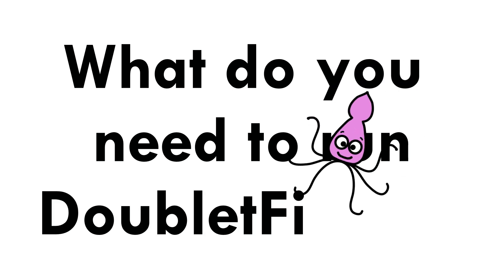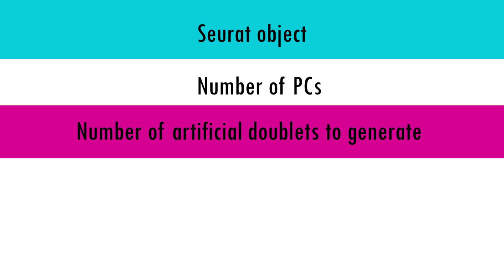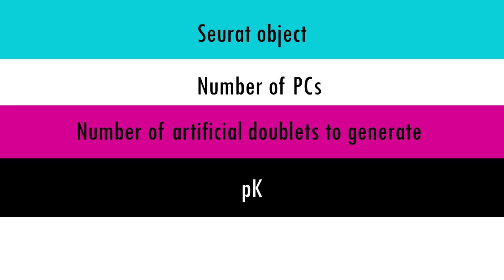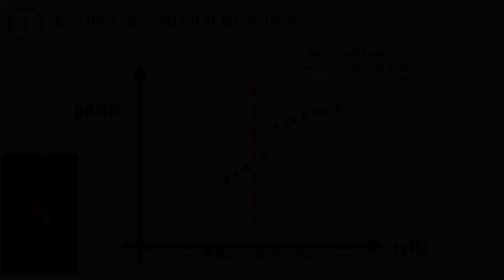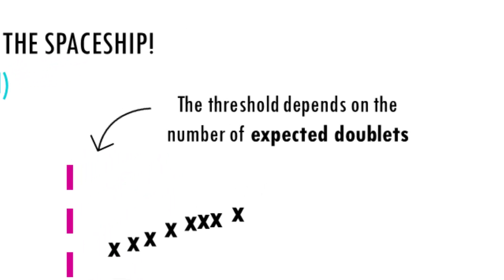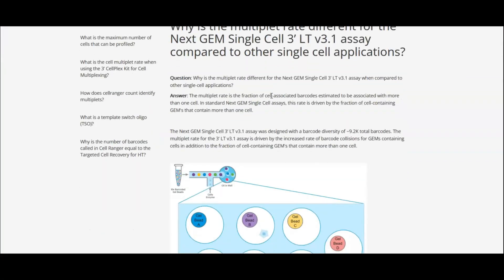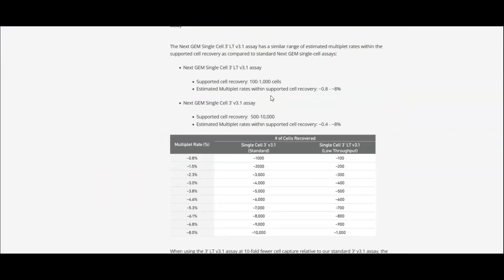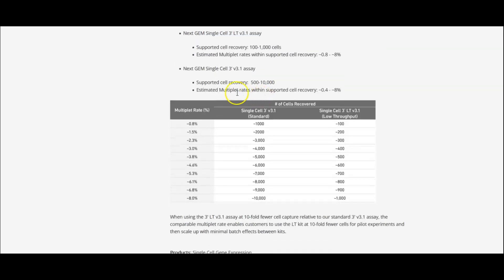So DoubletFinder basically needs five arguments. The Seurat object with your cells, the number of PCs, the number of artificial doublets to generate—which, again, the authors say doesn't really change the results. Then PK, which can be estimated using the paramSweep function for each dataset. And then nExp, which is the pANN threshold used to make final doublet-singlet predictions. Usually we estimate this from the cell loading densities into the sequencer. For example, 10X has published numbers of expected multiplets depending on your starting material.